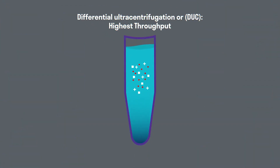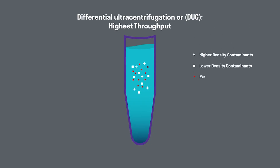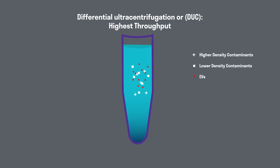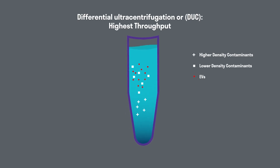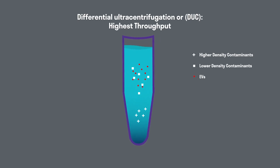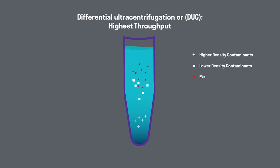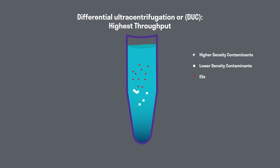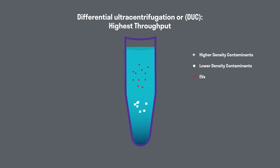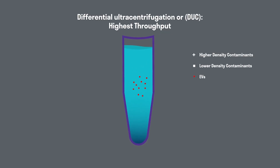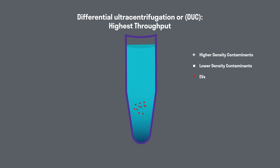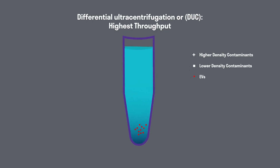Differential ultracentrifugation, or DUC, is a process that uses a series of progressively faster spins. This serves to first remove contaminants in the sample. Larger, denser ones are sedimented first at lower speeds, followed by increasingly smaller, less dense materials at higher speeds.